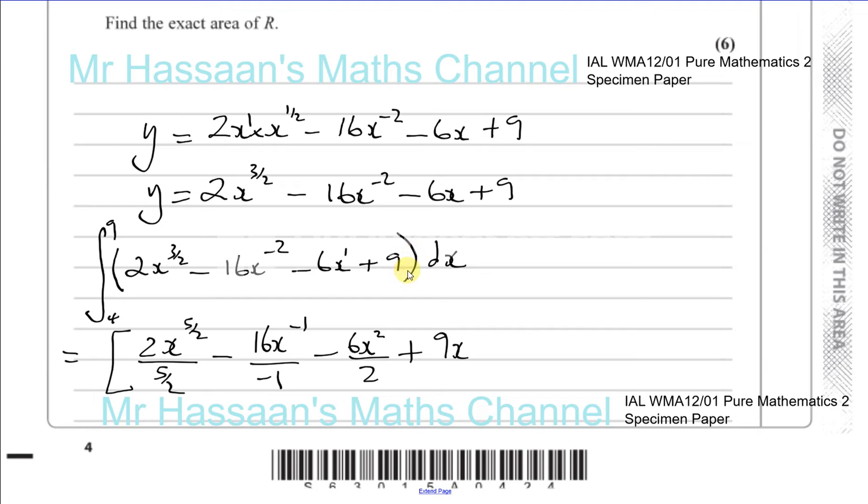It's not written. You add 1 to the power you get x to the power of 1 divided by 1. And we normally would put plus c but we don't have to here because we have these limits of 4 and 9 to put in. So what I'm going to do is I'm going to take this and put it on the next page.